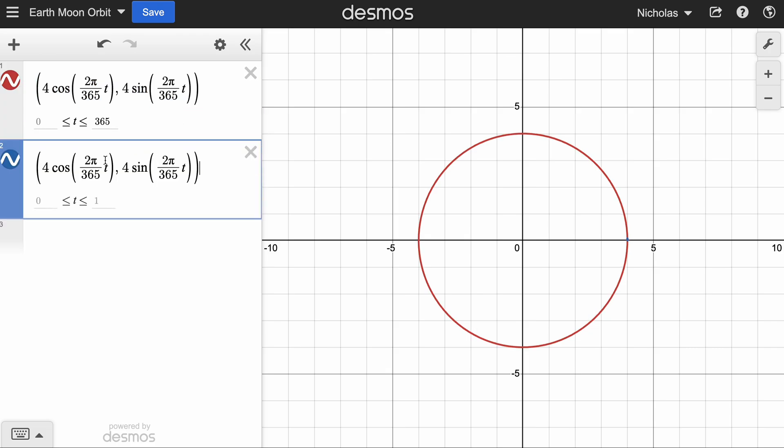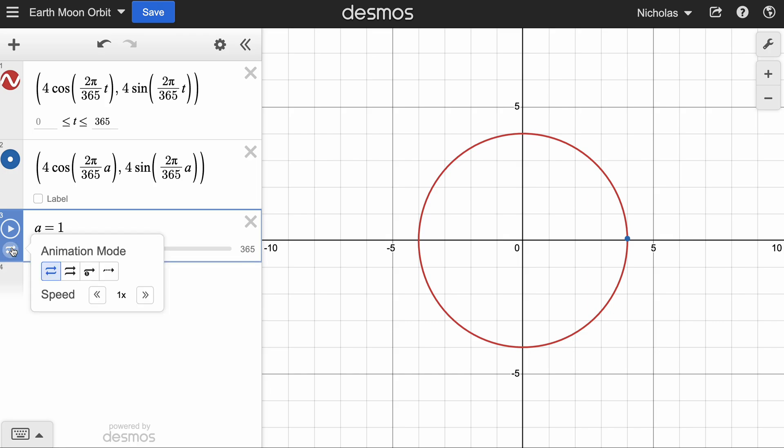Now we can actually watch the path of this. If I change t to some other slider, we'll do a because e is taken. And we'll go from zero to 365, and we should be able to get the Earth.